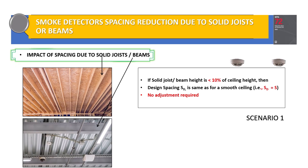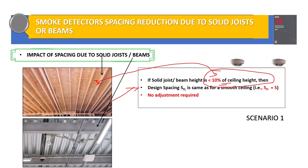Let us discuss Scenario 1. Look at the screen — we have figures showing solid joists and beams. If your building has either solid joists or beams, Scenario 1 applies when the solid joists have a depth less than 10 percent of the ceiling height, or if you have beams in your project that are also less than 10 percent of the ceiling height.